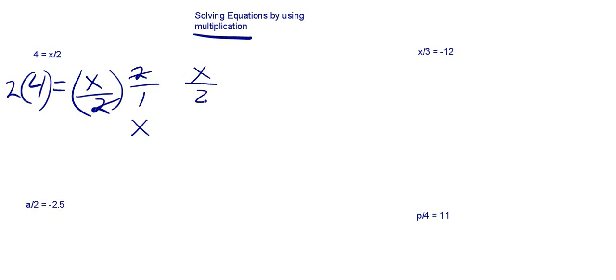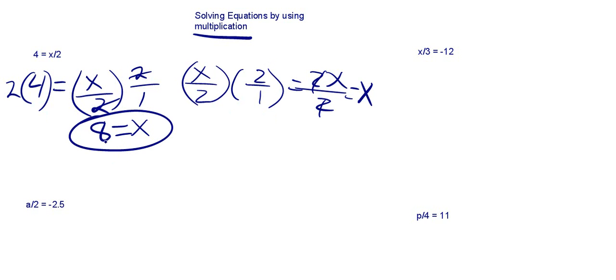And what's happening here? You got x over 2 times 2 over 1, that's equal to 2x over 2. 2 divided by 2 is 1, so you're just left with x. So we're just left with x. So 2 times 4 is 8. So what we know is 8 is equal to x, or x is equal to 8.